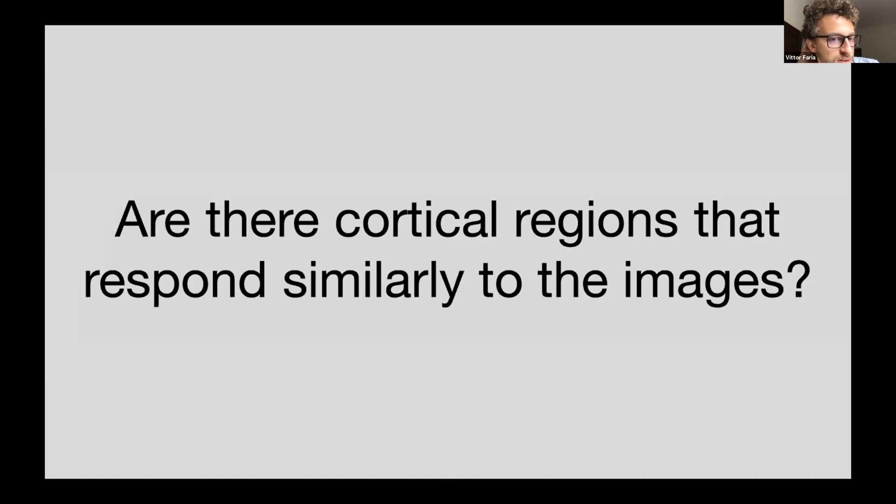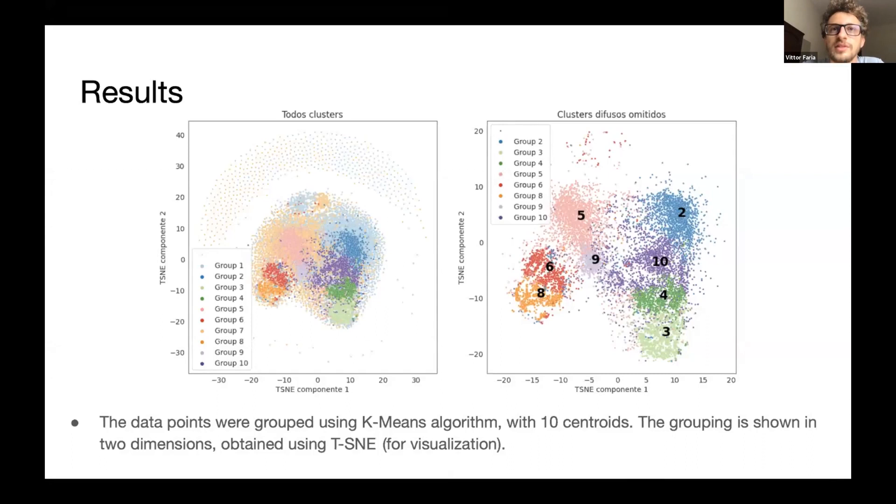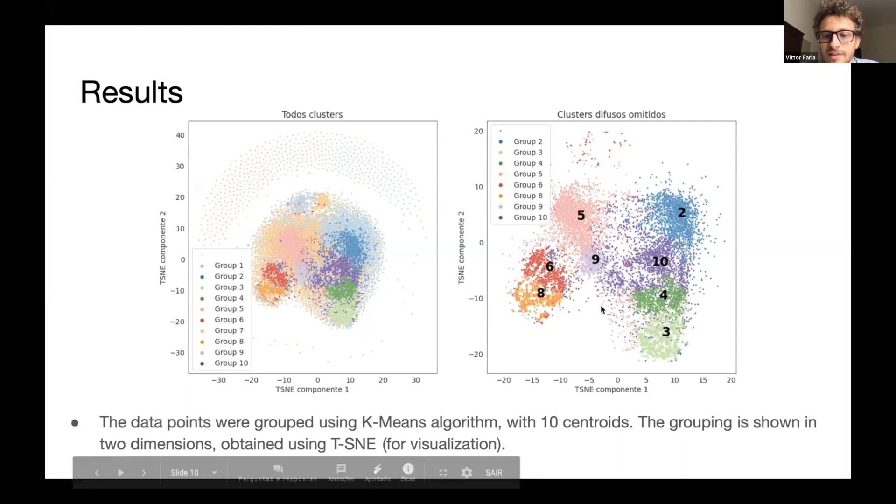We first tried to answer this question: are there cortical regions that respond similarly to the images? And we gave answer to this question using a non-supervised approach. With the K-means algorithm, we divided the dataset into 10 clusters. In the figure, we see this division in a non-dimensional space obtained with T-SNE for visualization. And so, we have the cluster division in this space.